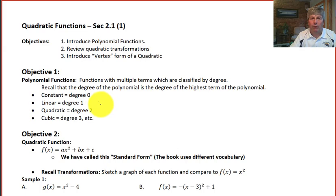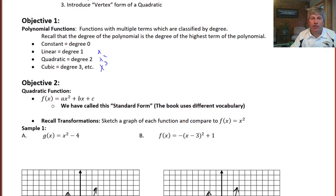So we're talking x, x squared, and x cubed. A quadratic function is generally written in what we call standard form, using the format ax squared plus bx plus c. The book uses a little different vocabulary for that particular one.